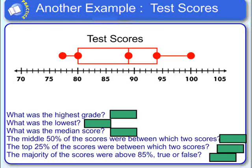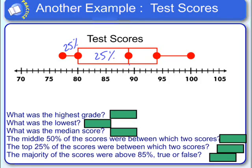Here we have some test scores from a particular class. And when you first look at it, it looks like most of the kids got between an 80 and an 89. But that's not true at all. Remember that a boxplot takes all the data — each section represents 25%. So just as many students got between a 77 and an 80 as did between an 80 and 89.